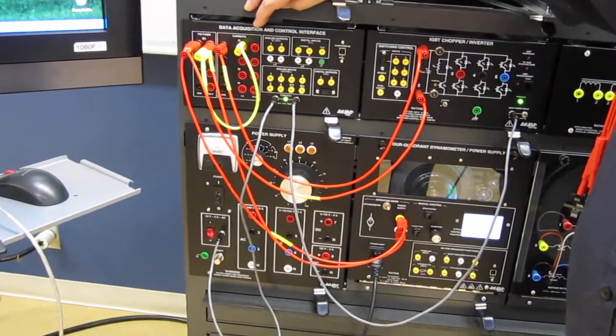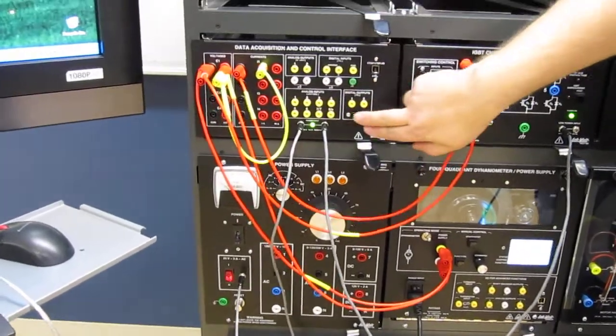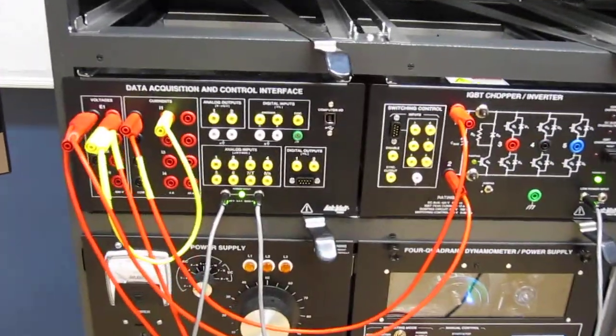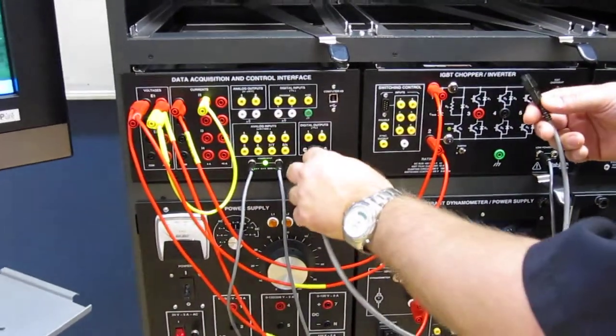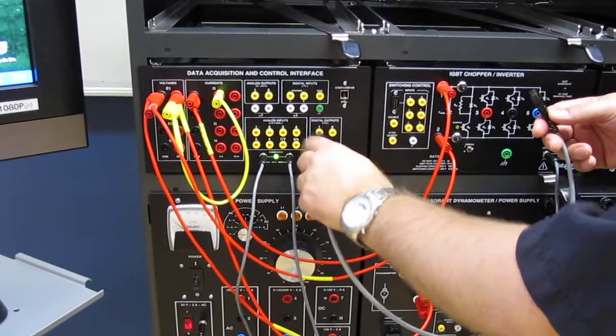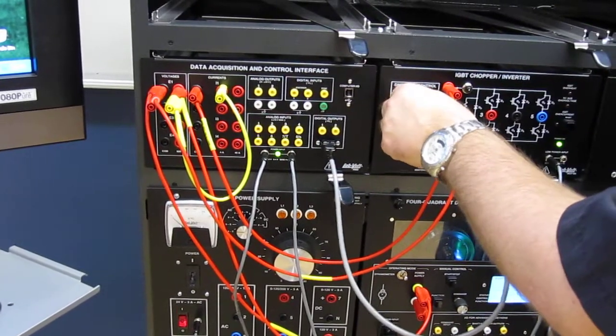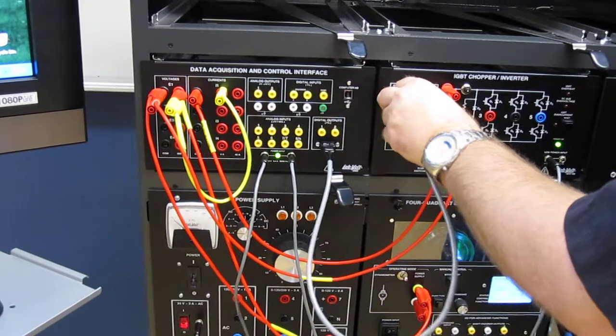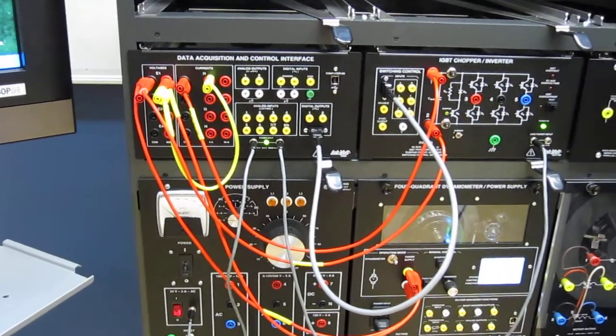The data acquisition is called now data acquisition and control because you have digital outputs that can control the firing of the transistors. So to do that you use one of these multi connector cables and you just connect that here. And you can monitor the transistor gate signals directly on the oscilloscope there if you wish.